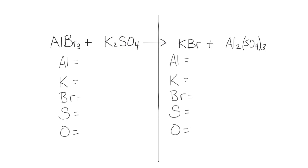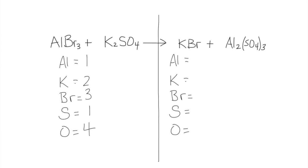We have aluminum, potassium, bromine, sulfur, and oxygen — listed in order starting with the metals. Aluminum and potassium are both metals, then the non-metals, and oxygen goes right till the end. On the left side: one aluminum, two potassium (from the subscript), three bromines, one sulfur, and four oxygens.